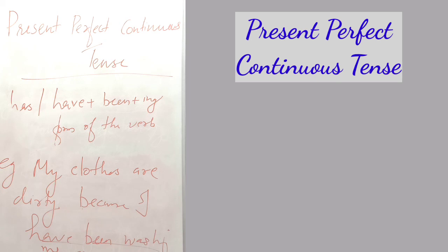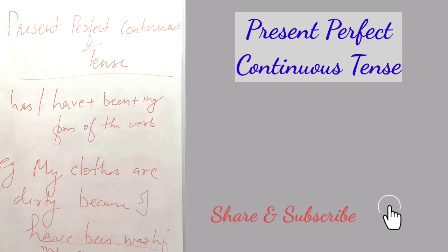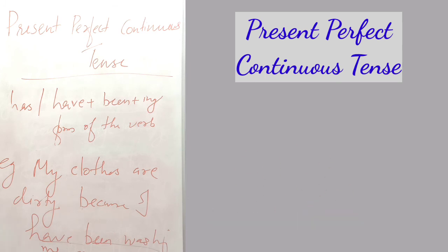So, the present perfect continuous tense is mainly used in three occasions. First, for activities that started in the past but have continued in the present. Secondly, for things that are annoying. Thirdly, for an action which began in the past and has just been completed but whose result is still present.